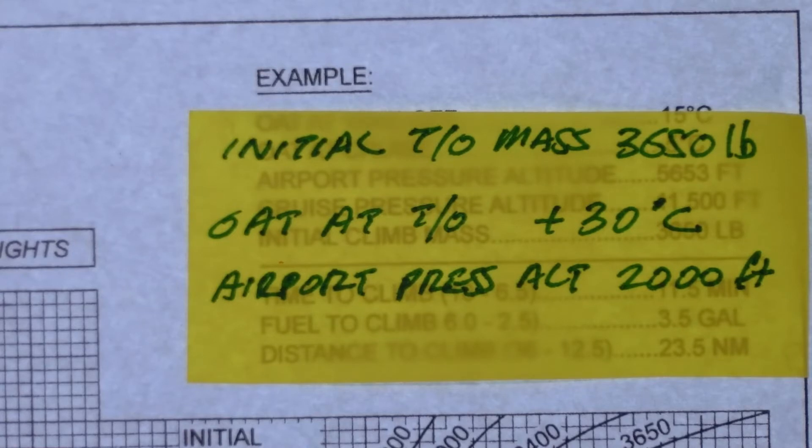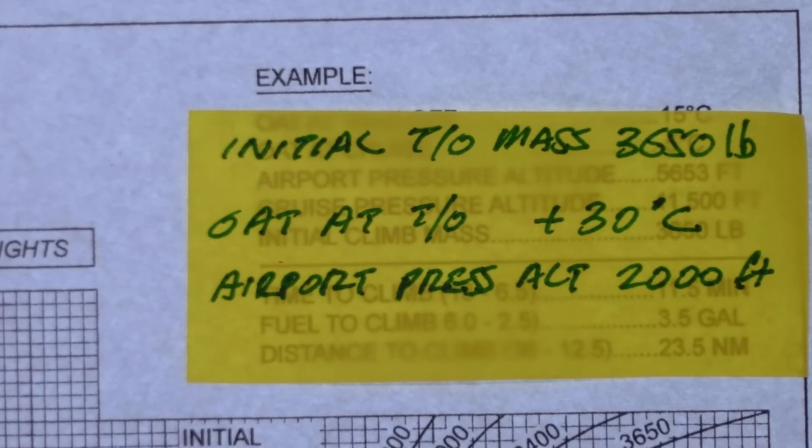Given initial takeoff mass of 3650 pounds, OAT at 30 degrees Celsius and airport pressure altitude at 2,000 feet, we are going to assume that actually there is a level below this and that is sea level. So we are going to assume that our airport pressure altitude is a cruise altitude. So we will plan to climb from sea level to 2,000 feet where the outside air temperature is 30 degrees Celsius. Let's do that now.